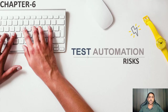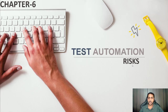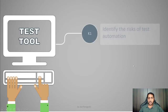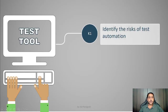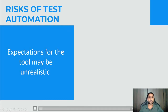Now we will see the next topic. In the previous lecture we saw the benefits of test automation, and now we will see the risks associated with test automation. We are going to discuss the risks, and as you know already, this is of type K1, so direct questions can come from this topic.